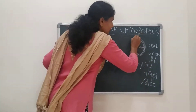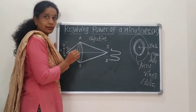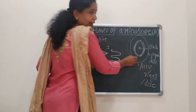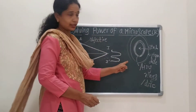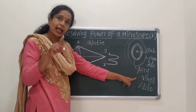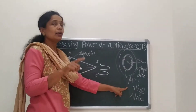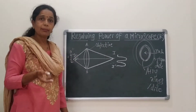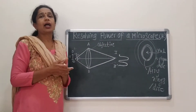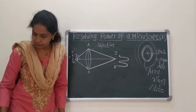Again, there is a central bright disc and Airy rings for the second object as well. This theory was given by the scientist Abbe, and it is applied to Fraunhofer diffraction.